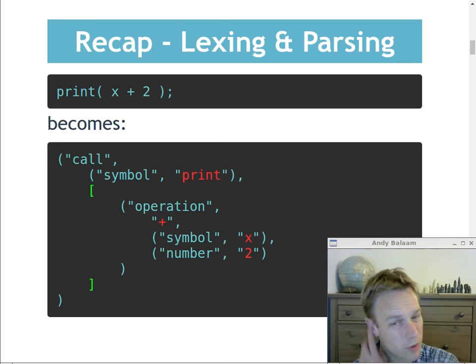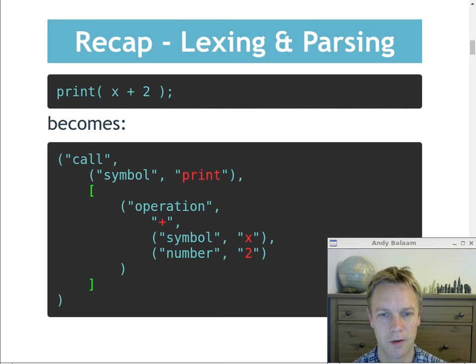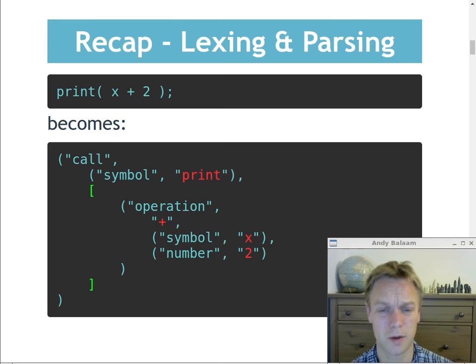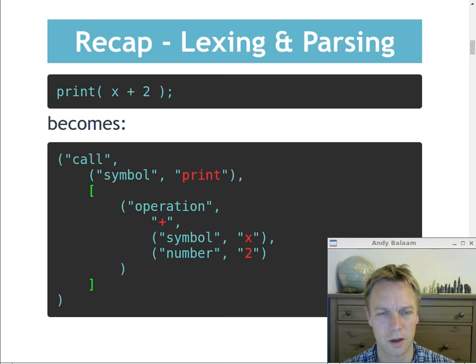Something worth pointing out: a design decision I made in CEL to simplify and shorten code is that lexer tokens, parse trees, and values are all represented by Python tuples. So instead of having a class, I've just used tuples — the first thing in the tuple is always the type string. This makes the code shorter but this video slightly harder to follow, so I'll keep guiding you through which part is which.